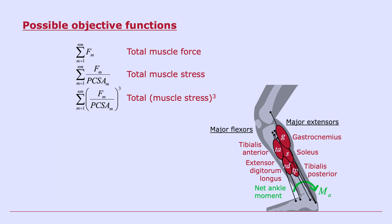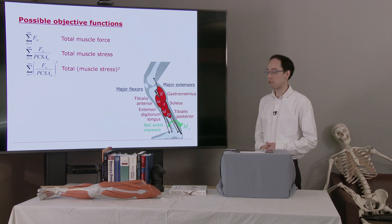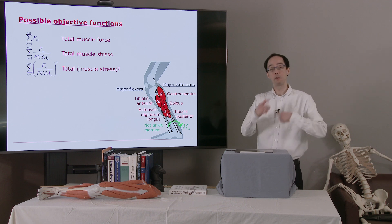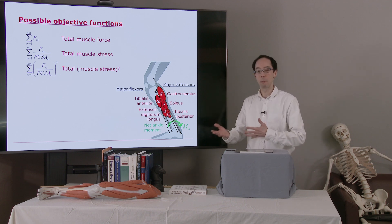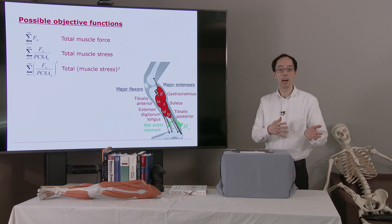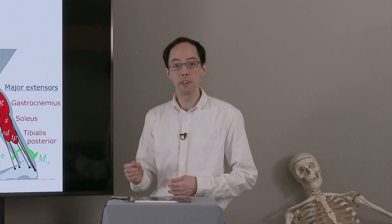Oftentimes we'll pick an objective function that we think makes a lot of sense, but the solution we get is complete nonsense. And so often it's an iterative process of defining an optimization problem, looking at the solution the optimizer delivers, and then refining it, perhaps adding constraints to avoid solutions we don't like. So we'll take another look at this in the next video, where we look at dynamic optimization.